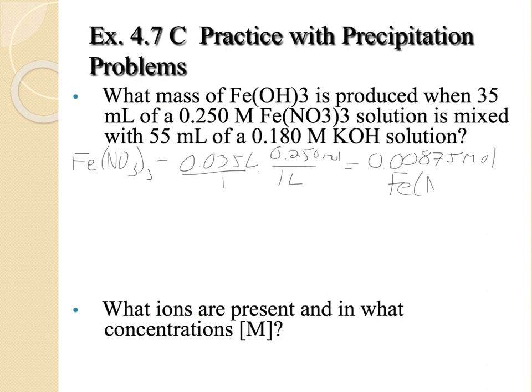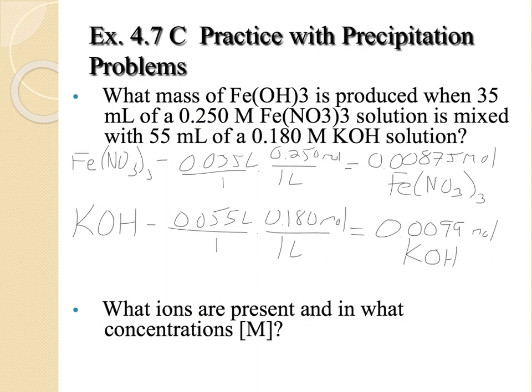We are going to need to split that up. There are three nitrates there and one iron. So we're going to pay attention to that later. Potassium hydroxide, 55 milliliters, 0.055 liters. And that gives me 0.0099 moles of KOH. And since that's a one-to-one ratio, that is both the potassium and the hydroxide separately.